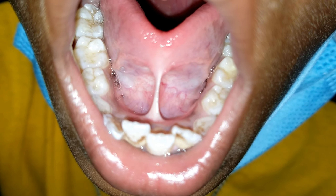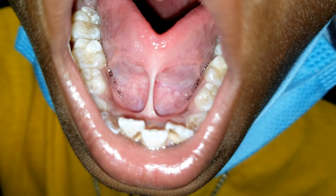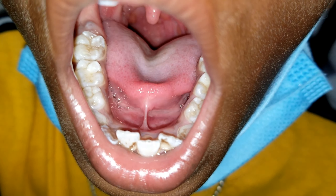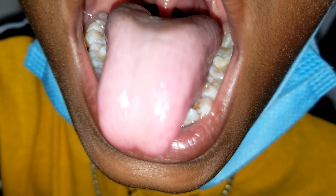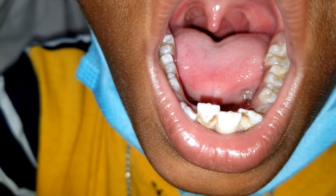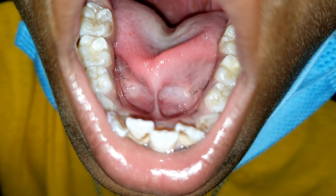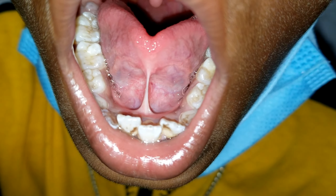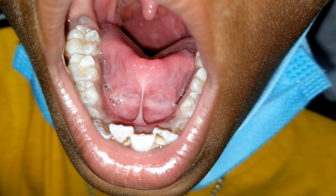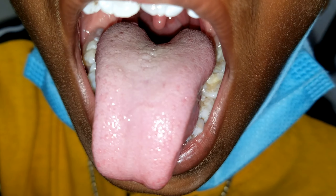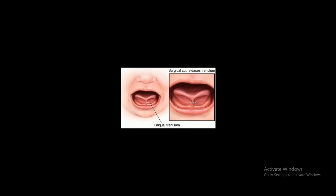Treatment of any significant tongue tie is frenulectomy with vertical closure, in which a transverse incision is given in the frenulum to release the tongue tie, followed by vertical closure of the incision. If only a thin mucosal fold is present, we can simply incise that mucosal fold. In this picture we can see a surgical cord release of the frenulum with the transverse incision.